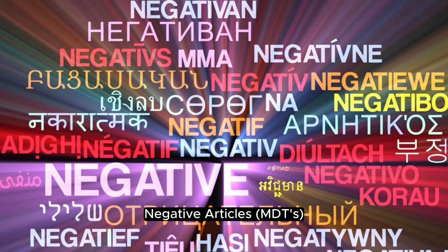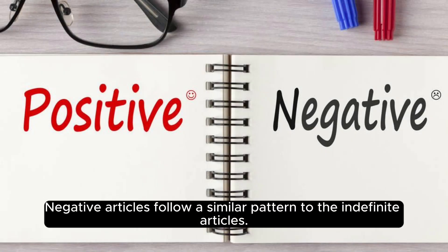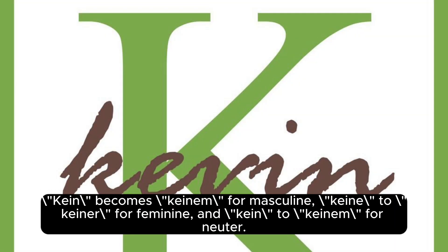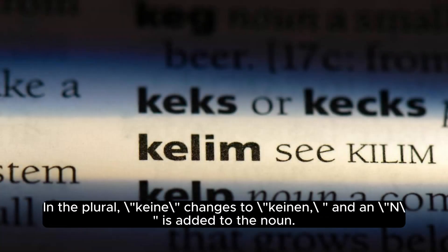Negative articles follow a similar pattern to the indefinite articles. 'Kein' becomes 'keinem' for masculine, 'kein' to 'keiner' for feminine, and 'kein' to 'keinem' for neuter. In the plural, 'kein' changes to 'keinen' and '-en' is added to the noun.